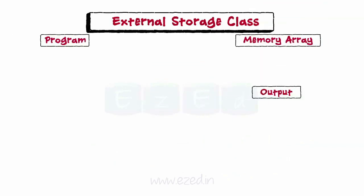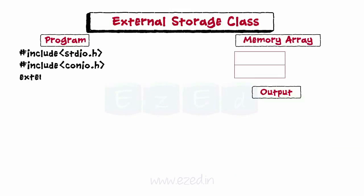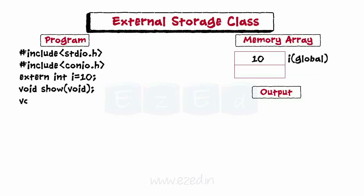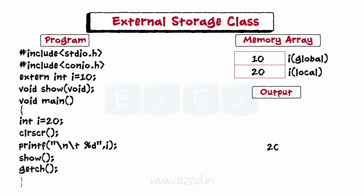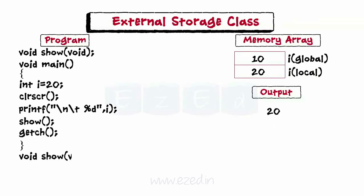Now let's analyze the program to demonstrate the use of external storage class. We have declared i as an external integer variable and assigned it a value of 10. Within the main function, variable i is declared again as 20. The scope of this local variable is only within the main function, so its value is printed as 20. When the function show is called, i referred there is the global variable i, and so it is printed as 10.